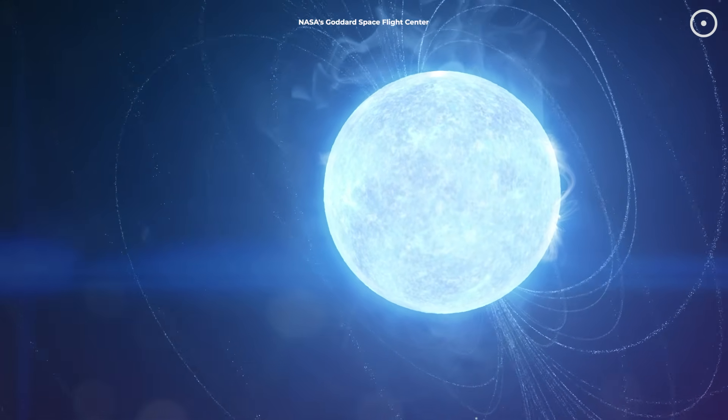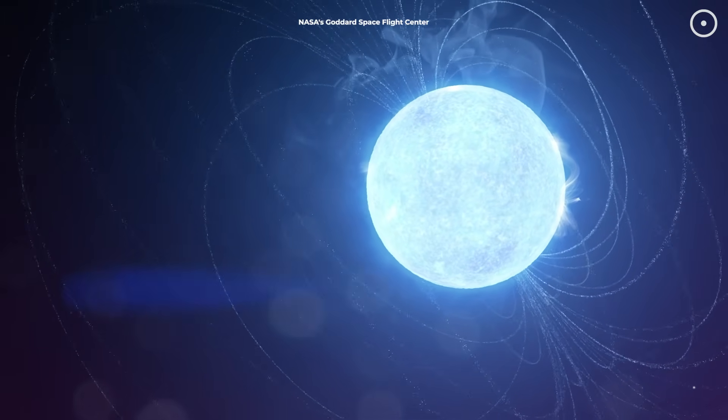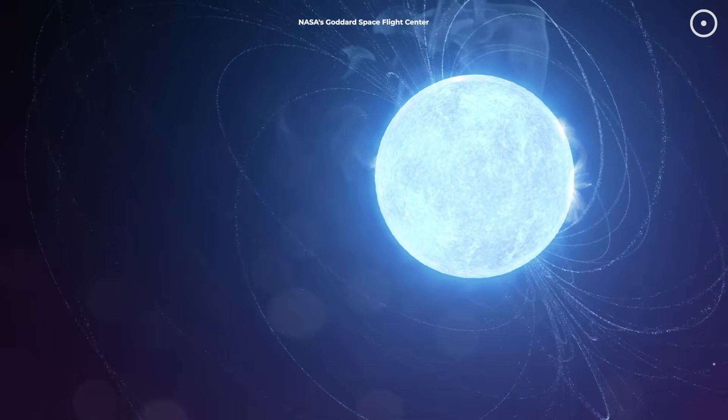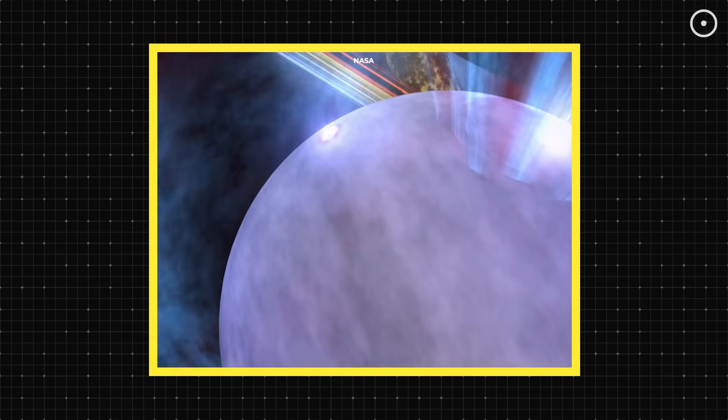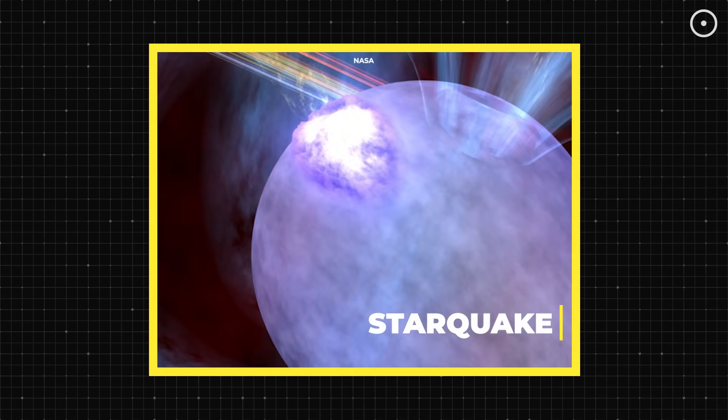this magnetar, sitting a comfortable 50,000 light-years away from Earth, had what scientists call a starquake. When I say starquake, I don't mean a little tremor.